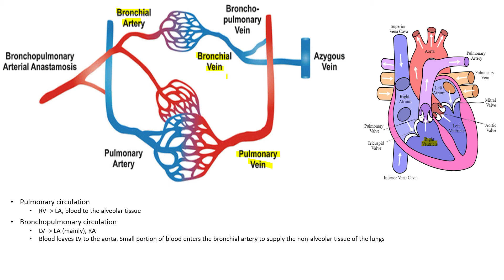The bronchial vein mixes with the pulmonary vein, and the pulmonary vein has oxygenated blood returning to the left atrium — that's why it's mostly blood to the left atrium. However, some venous blood from the bronchial vein can feed into the azygous vein, and this blood will then feed into the right atrium — that's why some of this blood actually enters the right atrium as well.